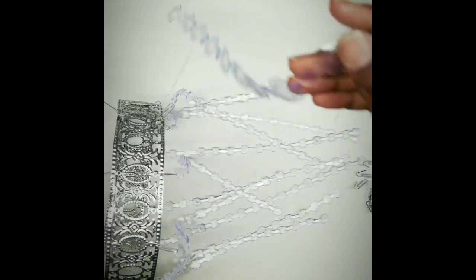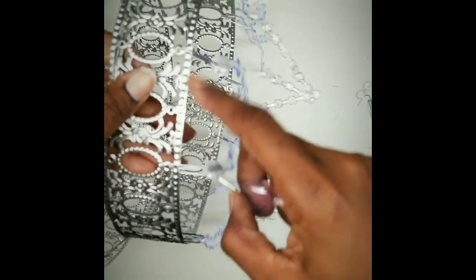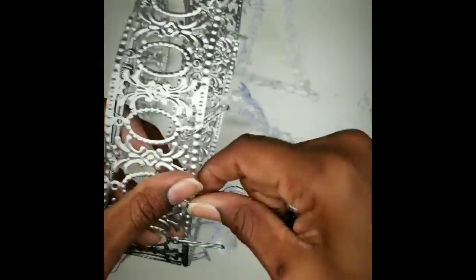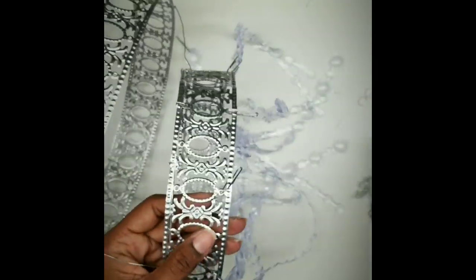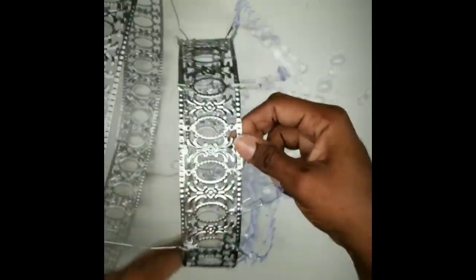All the small circles are in. Now we're going to start putting the large circle strands in, in between, every other hole.